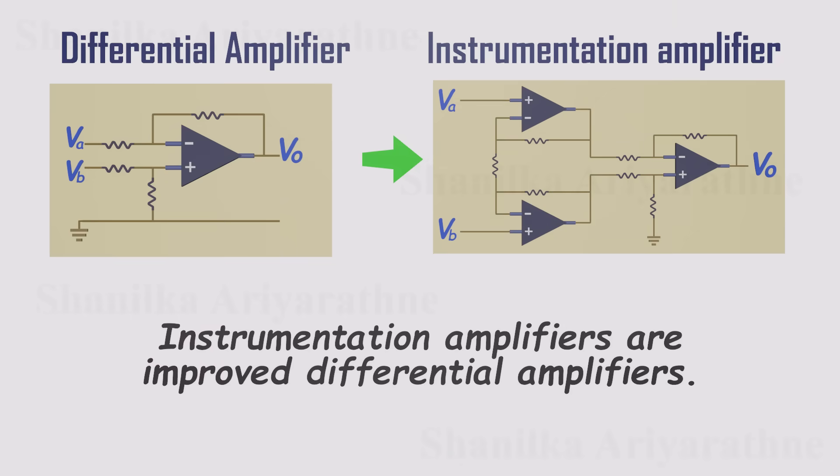At their core, instrumentation amplifiers are really just an upgraded version of the standard differential amplifier. In theory, both circuits do the same thing. They take two inputs, subtract one from the other, and then multiply the result by some gain.